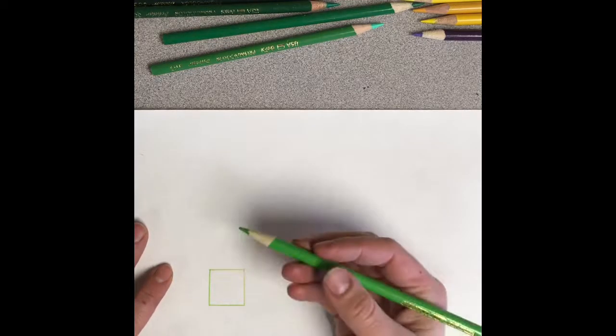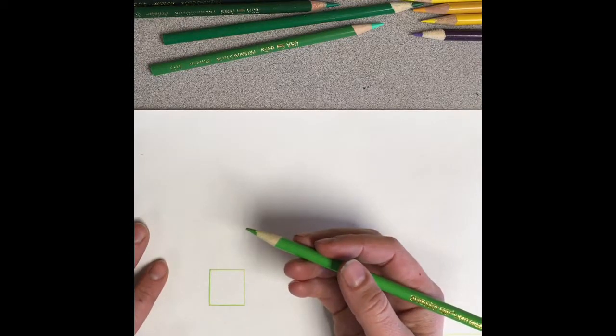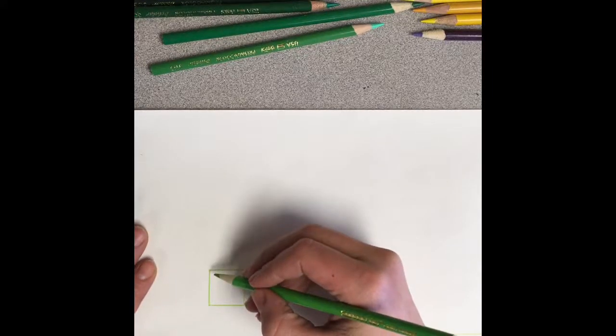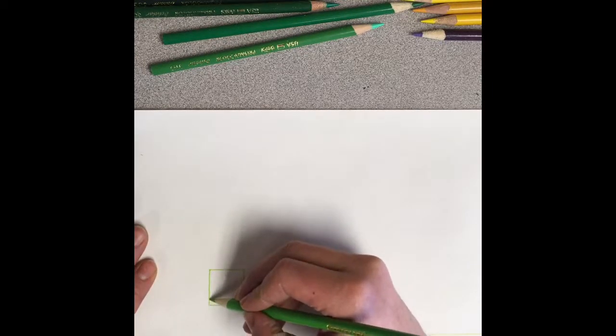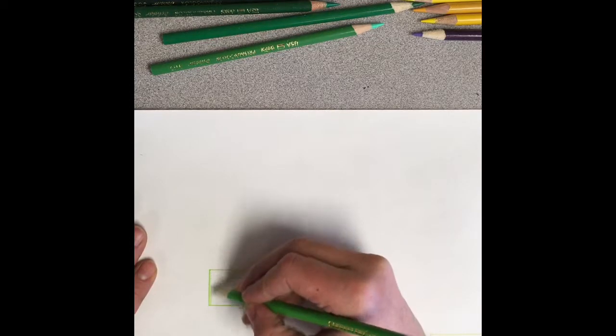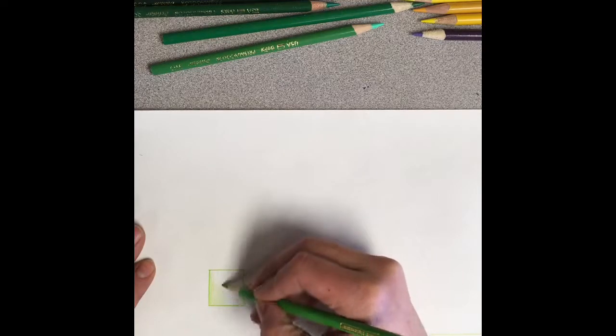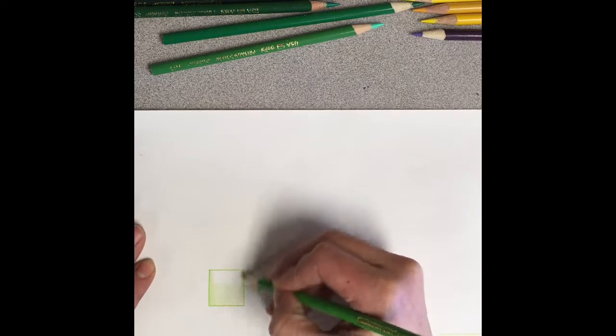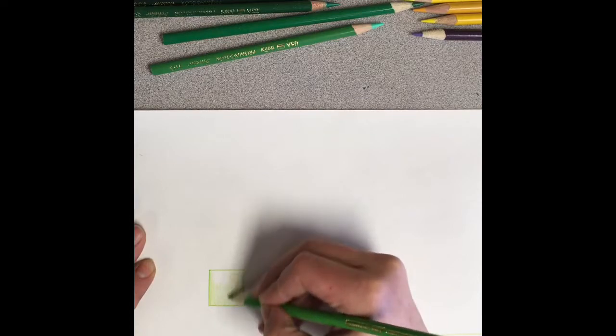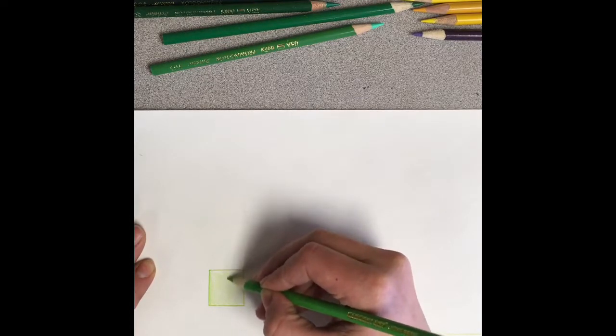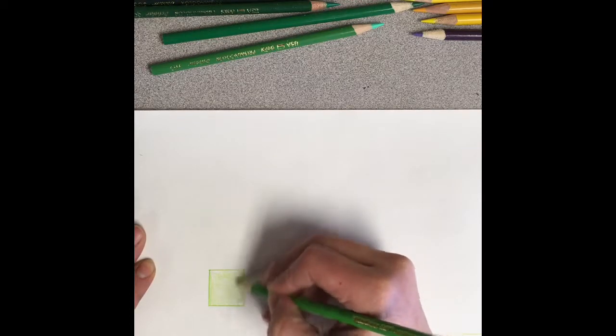The first way I'll show you for blending colors relates to value, which we've discussed with value tornadoes. Value means the lightness or darkness of a color. With this colored pencil, I'm going to use a very light amount of pressure. That means as I'm coloring, my hand presses down on the paper lightly, which makes the color look light.